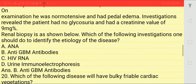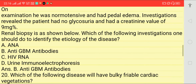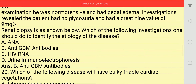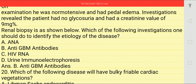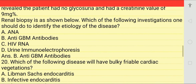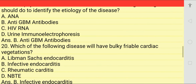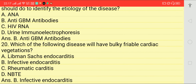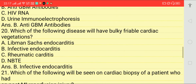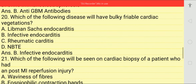Next: a 51-year-old person comes with complaint of hematuria. On examination he was normotensive and had pedal edema. Investigation revealed no glycosuria, and creatinine value was 9 mg%. Renal biopsy shown below. Which of the following investigations should be done to identify the disease? Options: anti-GBM antibody, HIV RNA, urine immunoelectrophoresis. Answer is B — anti-GBM antibody.